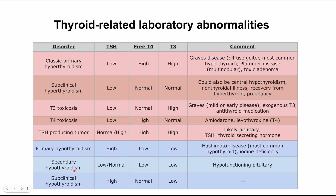Secondary hypothyroidism also presents with low thyroid hormone, but TSH is either normal or low. This is most commonly caused by a hypofunctioning pituitary — the opposite of a TSH-producing tumor. The pituitary is producing too little TSH, resulting in hypothyroidism and low thyroid hormone.